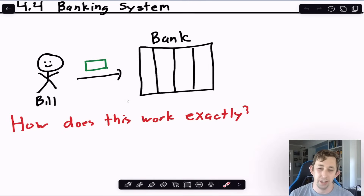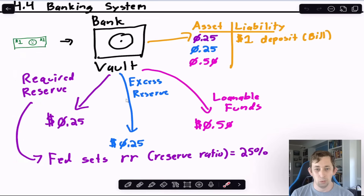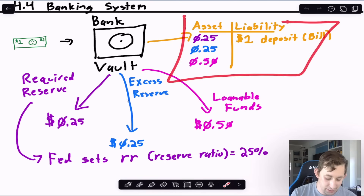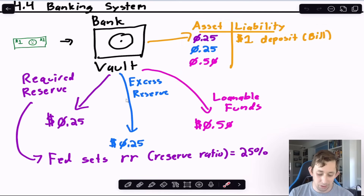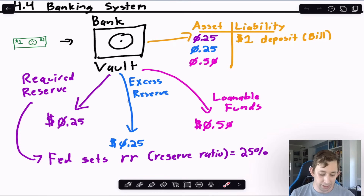Before discussing monetary policy, we need to understand how the banking system works. When you deposit a dollar into your checking account, the bank records it using a T-account or balance sheet. Your deposit is a liability — meaning the bank owes you that money back on demand. Correspondingly, the bank gains assets equal to that liability, since assets always equal liabilities.